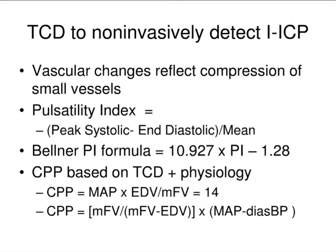Pulsatility index is the ratio of peak systolic minus end-diastolic divided by mean velocity. A number of people have used that to correlate with intracranial pressure. They've put the PI into formulas that correspond well with ICP, also using other derived measures of flow velocities — systolic or mean velocity, end-diastolic velocity, and mean arterial or diastolic blood pressures in various formulas — to get that non-invasive ICP estimate.